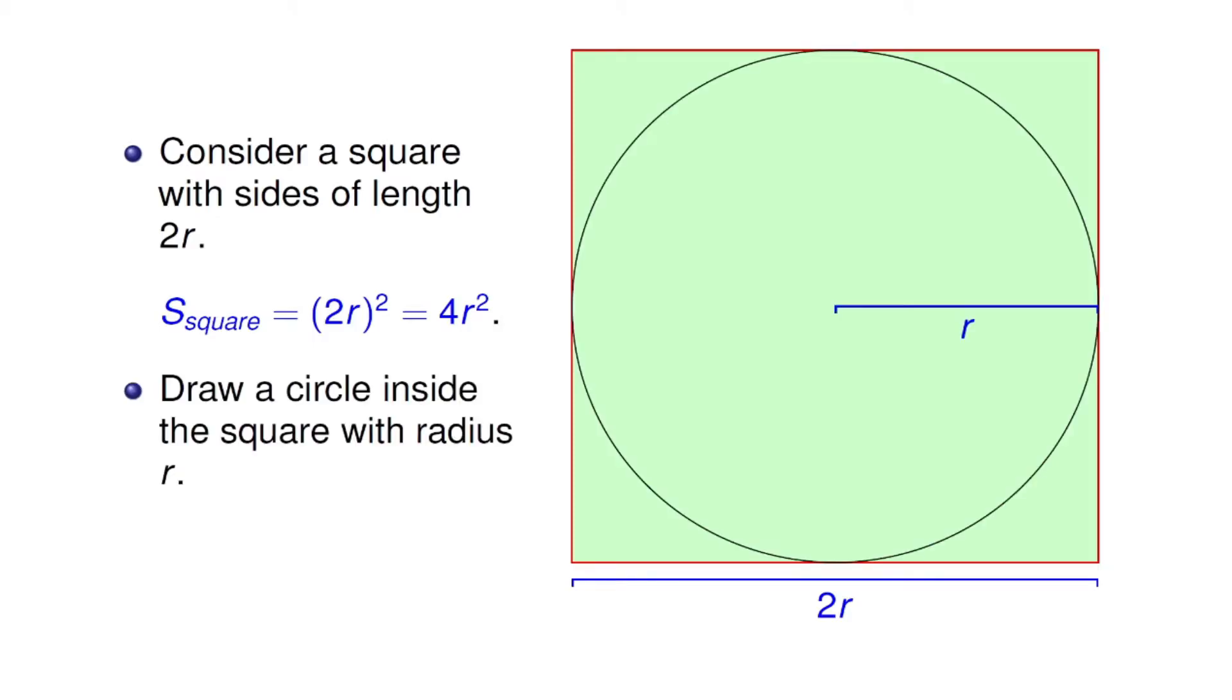Now let's draw a circle inside this square. The radius of this circle is going to be r. Therefore, the area of the circle is S_circle equals pi r squared.